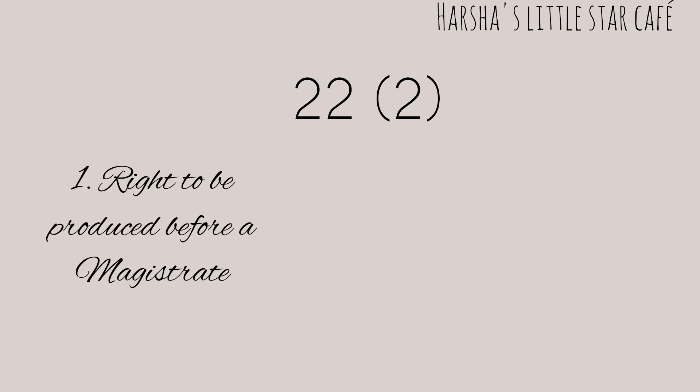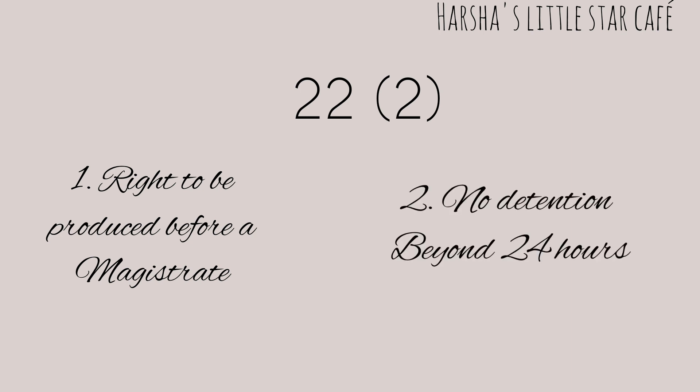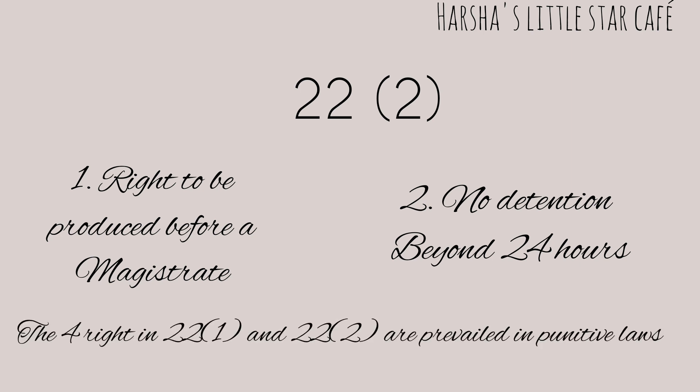Article 22 clause 2 also talks about two rights. The first one is the right to be produced before a magistrate, and the second one is that there shall be no detention beyond 24 hours. Any person arrested must be produced before a magistrate within 24 hours of taking them into custody, excluding travel and necessity time. If the person is not produced within 24 hours, the person must be released. Exceeding 24 hours is only possible under judicial custody. These four rights in clauses 1 and 2 prevail in punitive laws.